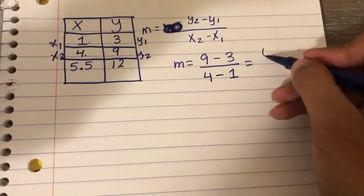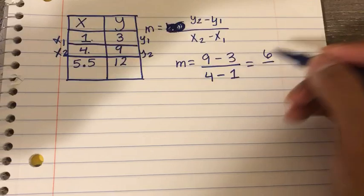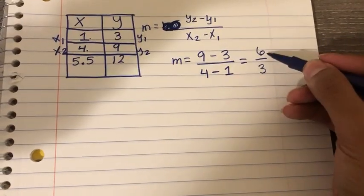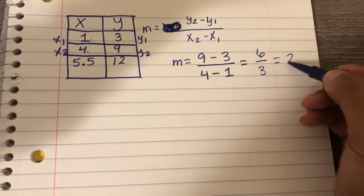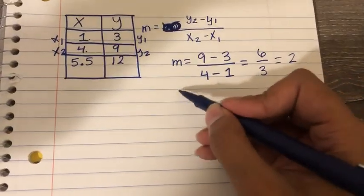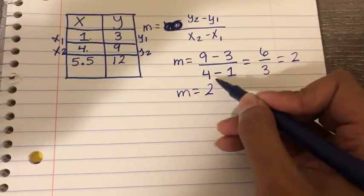So 9 minus 3 is 6, and 4 minus 1 is 3. I can simplify, so 6 divided by 3 gives me 2. My slope, m equals 2.